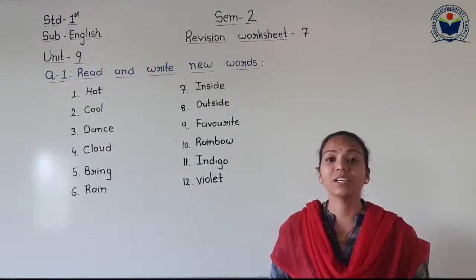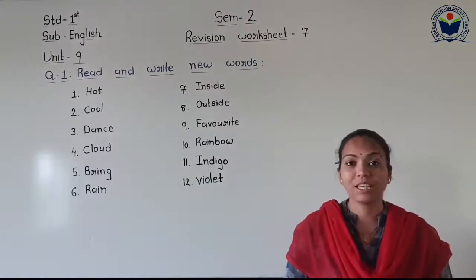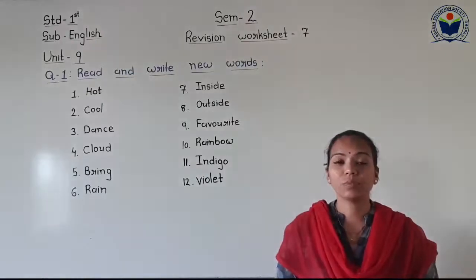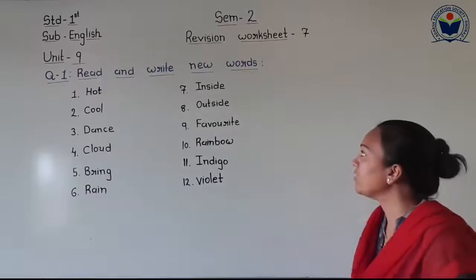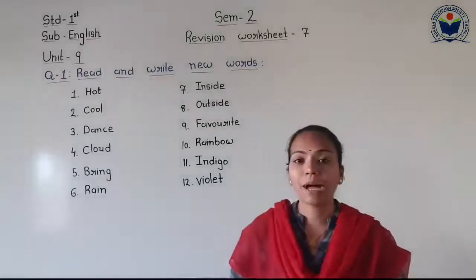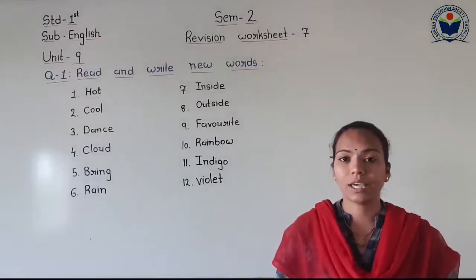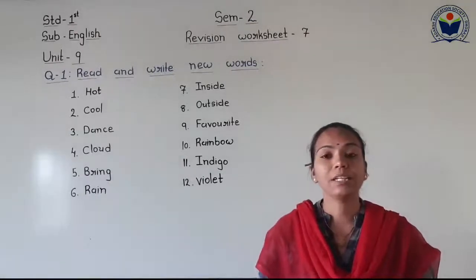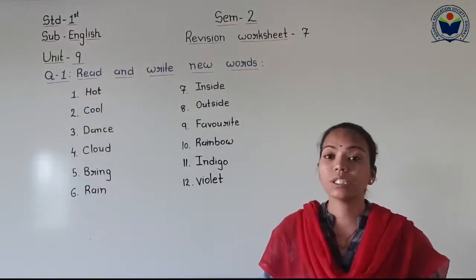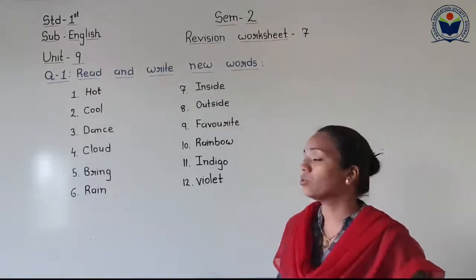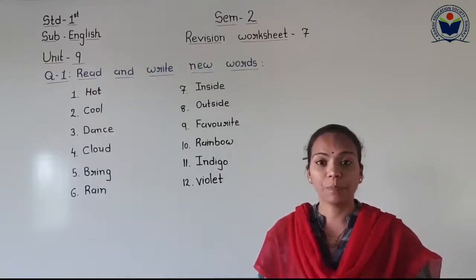Okay dear students, first of all we will start with Question number 1. Please take your textbook and read the heading of Question number 1. Its heading is 'Read and write new words.' Here you can see there are a total of 12 new words which are from Unit 9's poem and story. If you learn these new words, it will be the easiest way to complete your questions.